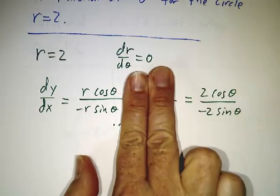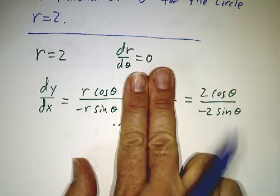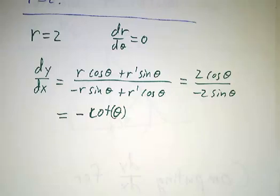r' is 0. So, you just get the r's cancel, and you just wind up with minus the cotangent of theta.